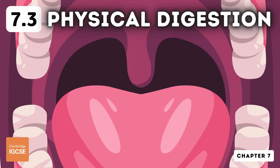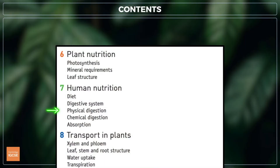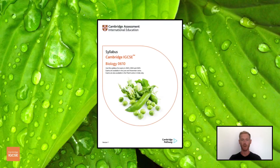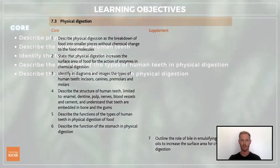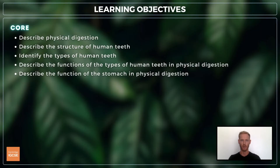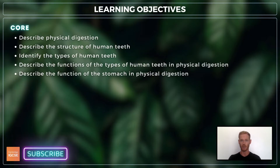Hello and welcome to another complete Cambridge IGCSE Biology lesson, where you'll learn absolutely everything you need to know on topic 7.3, Physical Digestion. As always, we'll be following the Cambridge syllabus exactly. For topic 7.3, you need to describe the term physical digestion with reference to the stomach and the different types of human teeth, describe the structure of a human tooth, and for extended, explain the role of bile in emulsifying fats.